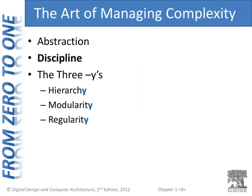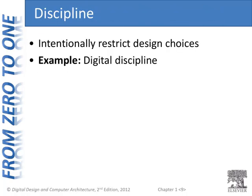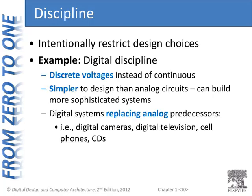The next principle is discipline. Discipline is when we intentionally restrict our design choices. A major example is digital discipline, which is what really applies to this course. Digital discipline means that instead of using continuous voltages, we consider only discrete voltages. These are simpler to design than analog circuits, and because of that, we can build more sophisticated systems. This is in fact the reason why digital systems are replacing their analog predecessors — digital cameras have overtaken analog cameras, digital television — because working at a higher level of abstraction using digital discipline, we can build more complex designs.